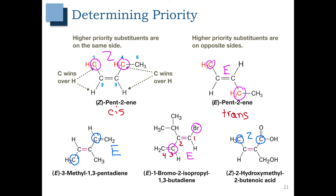An important thing to note: we have to have two different groups attached to both carbons in order to use EZ. And if we have a hydrogen attached to each carbon, that's the only situation where we can also use cis and trans.